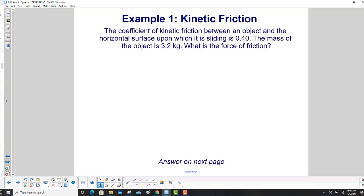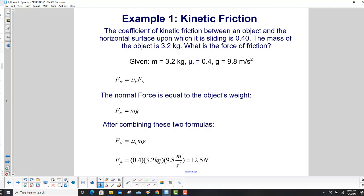The coefficient of kinetic friction between an object and the horizontal surface upon which it is sliding is 0.40. The mass of the object is 3.2 kilograms. What is the force of friction? We list our givens, as always. We have a mass, a coefficient of kinetic friction here, and the acceleration due to gravity. The force of friction is mu times normal. The normal force is equal to the object's weight, as the object is not bouncing up and down. So, we combine these two formulas. We substitute the normal force right into there, and we get the force of friction is mu times mg. Here's mu, which is unitless. Here's our mass. Here's our acceleration. And what do we get? 12.5 newtons.